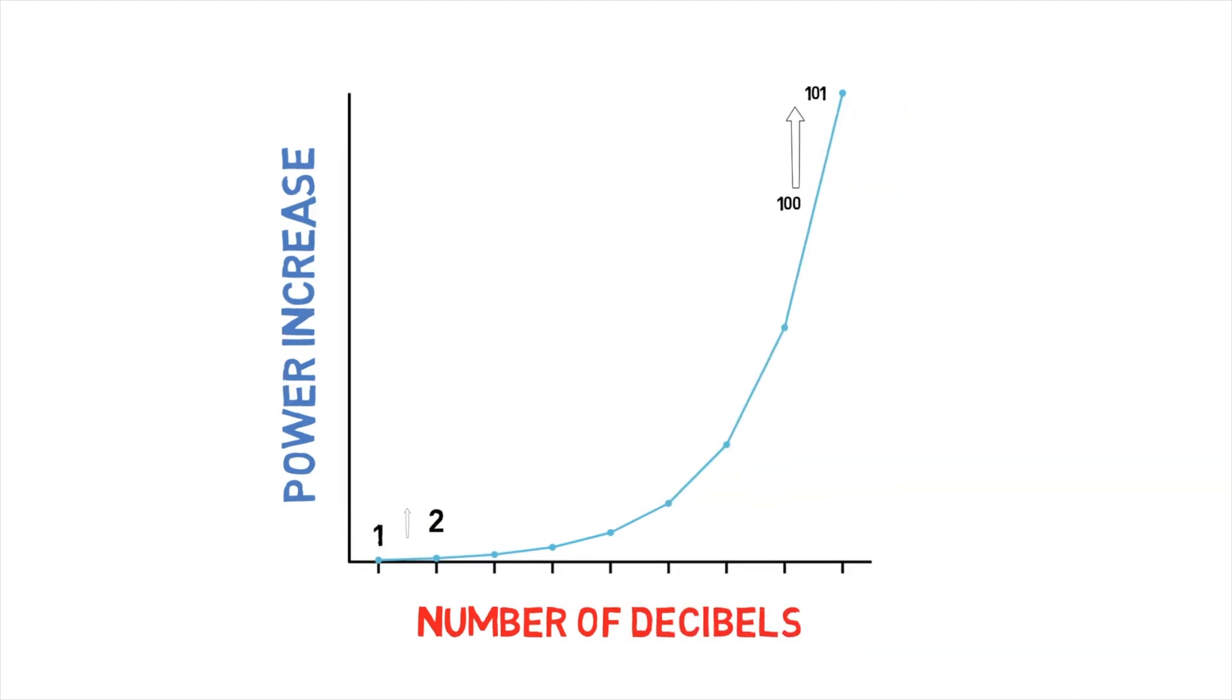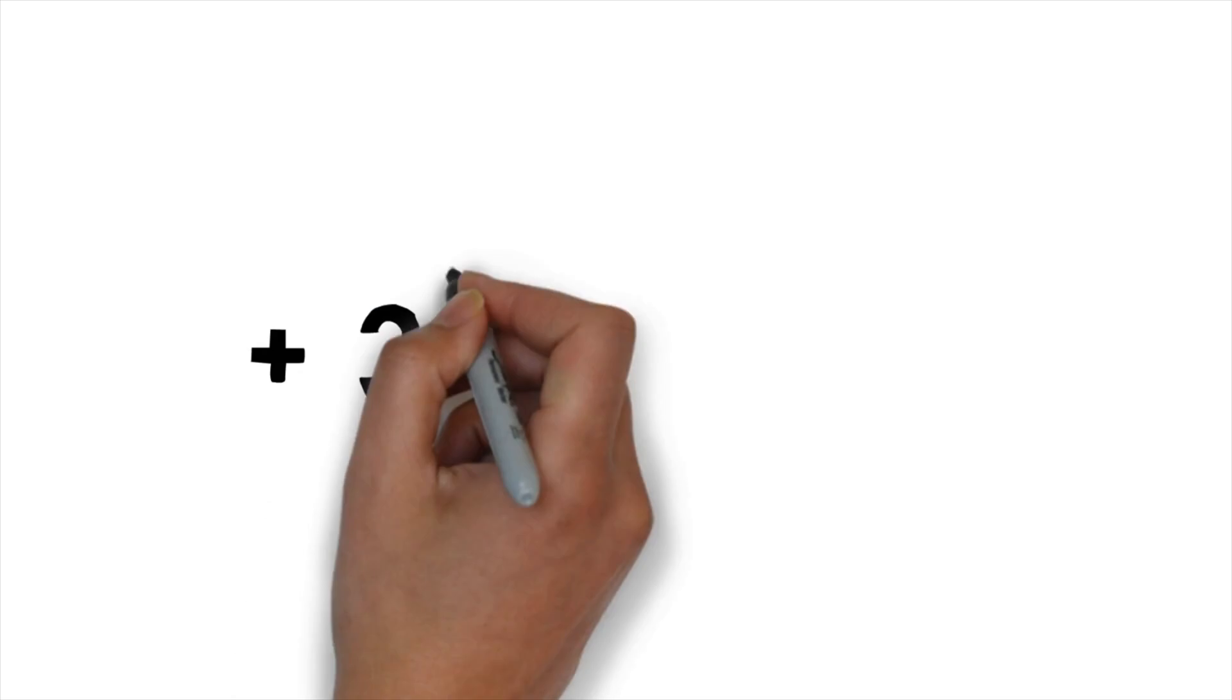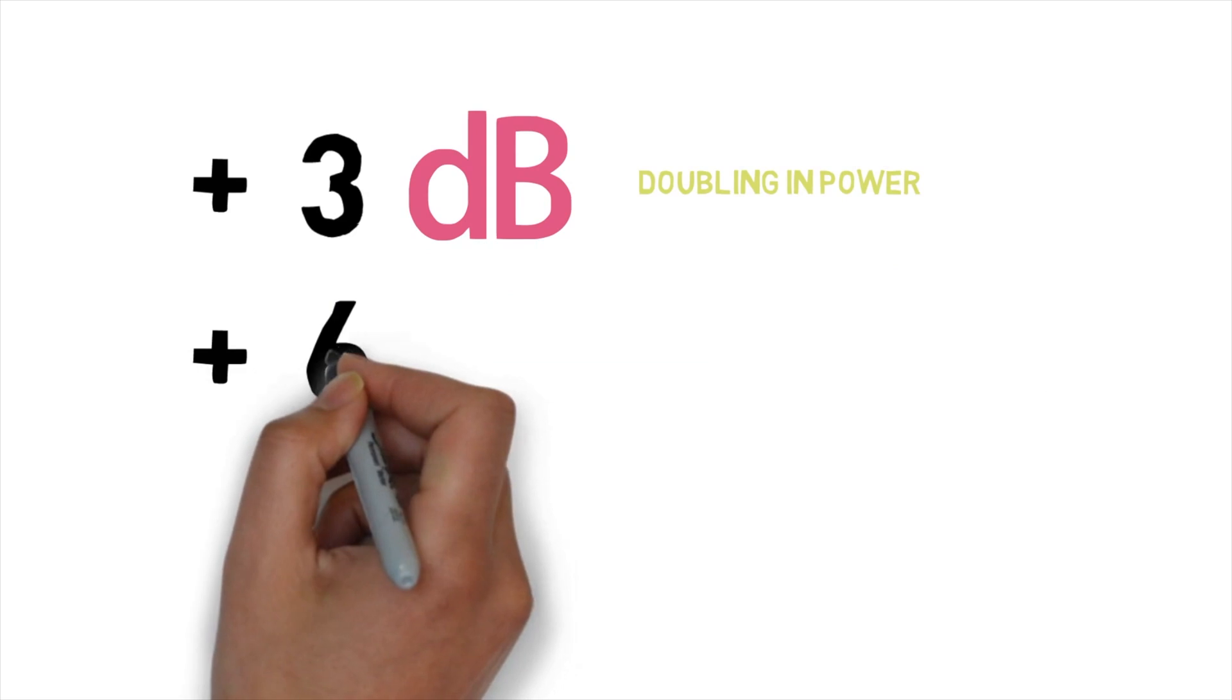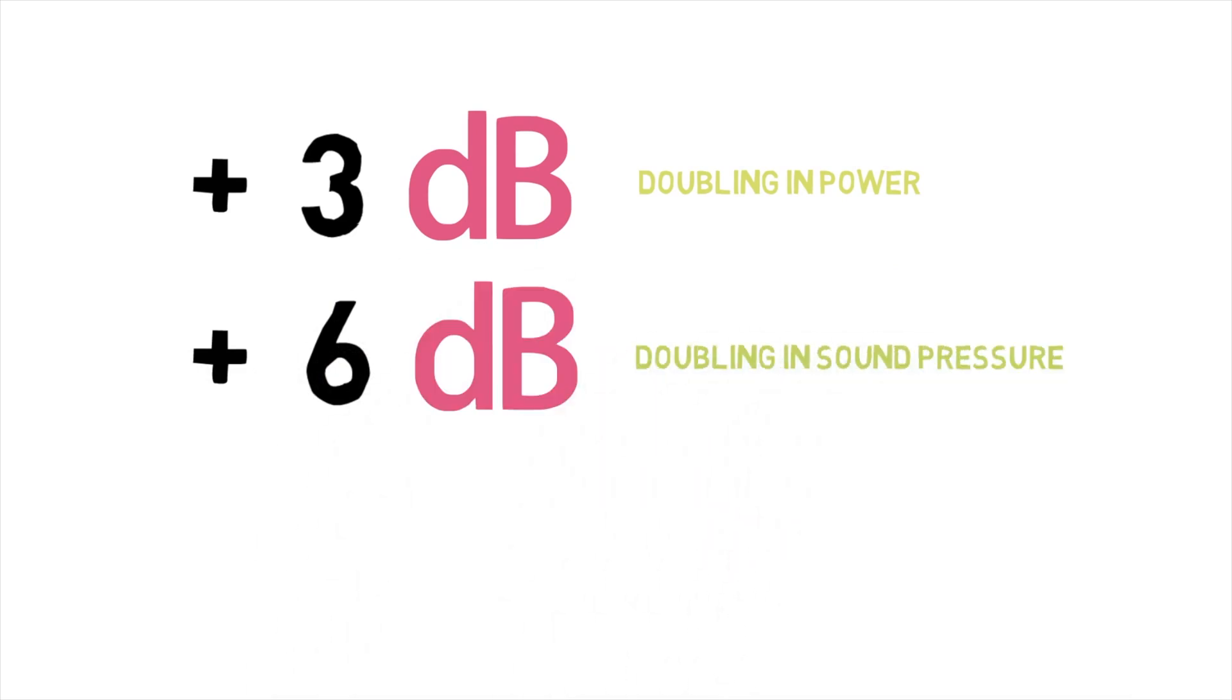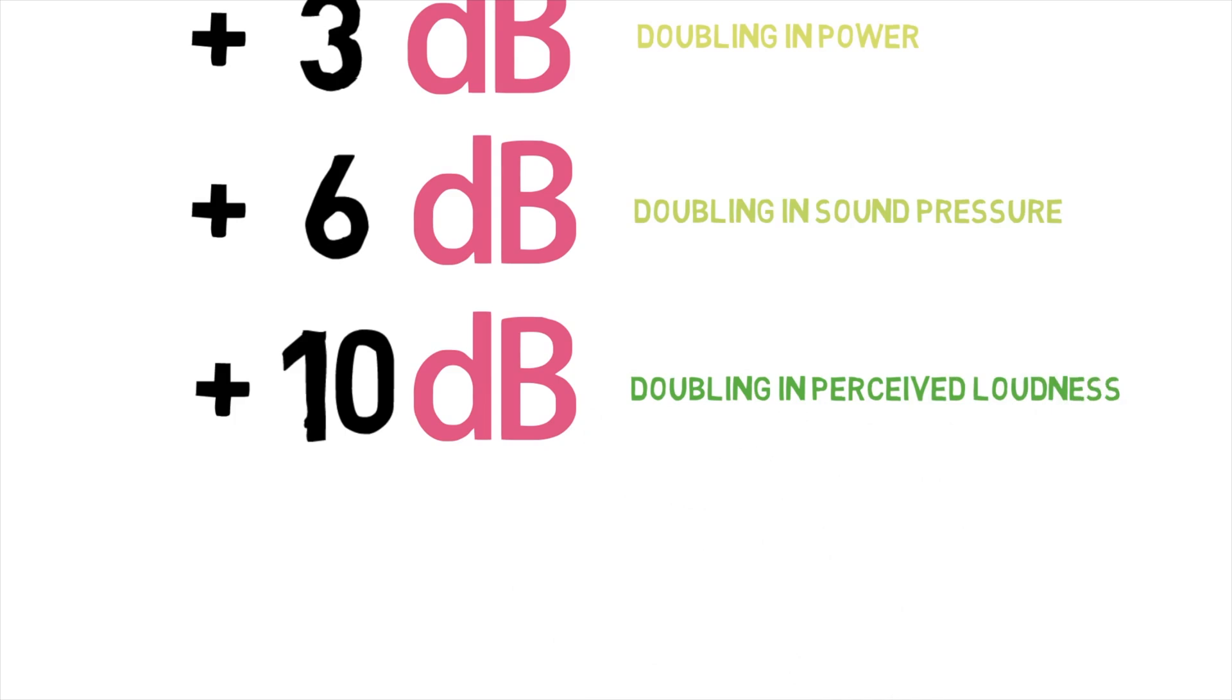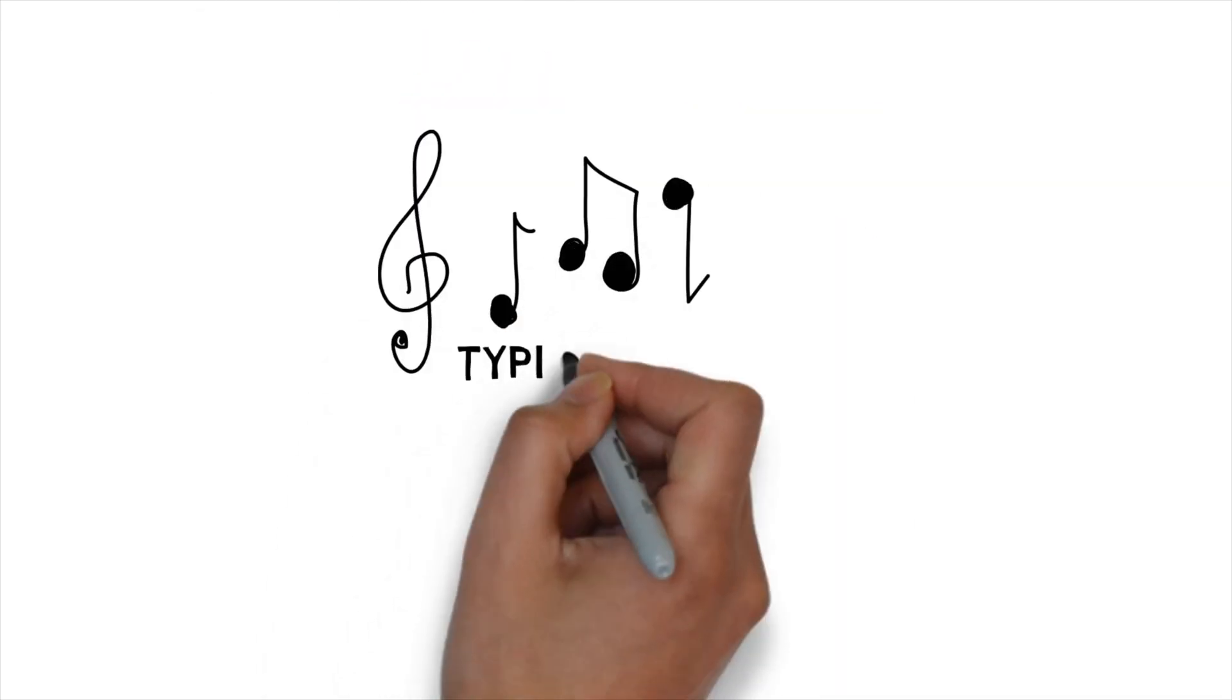Whoa! If we look at some basic numbers, plus 3 dB is a doubling in power. Plus 6 dB, however, is a doubling in sound pressure. Plus 10 dB is a doubling in perceived volume. In other words, listening to it, you'd say that was twice as loud.